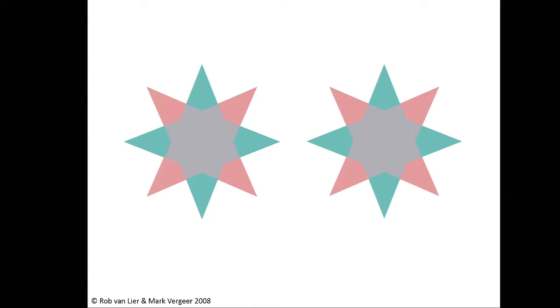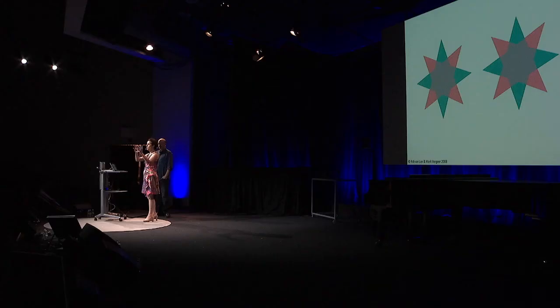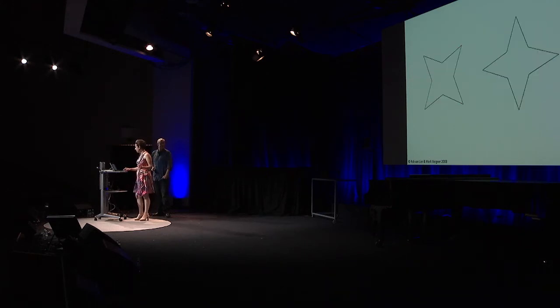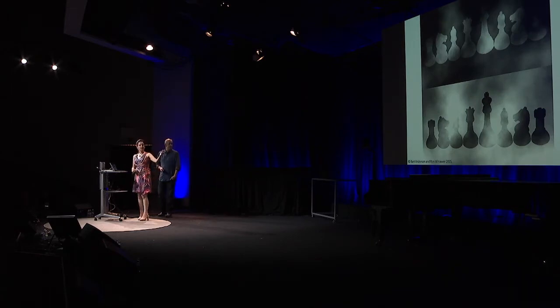A lot of illusions are about ambiguous information, and this information that can be interpreted in two different ways by providing one or other context, then it can look like completely different shapes in this particular example. Or say about, we're talking about black and white. We have two rows of chess pieces, they're exactly identical. The top one looks white, the bottom one looks dark. It's about the context, they're both exactly the same.